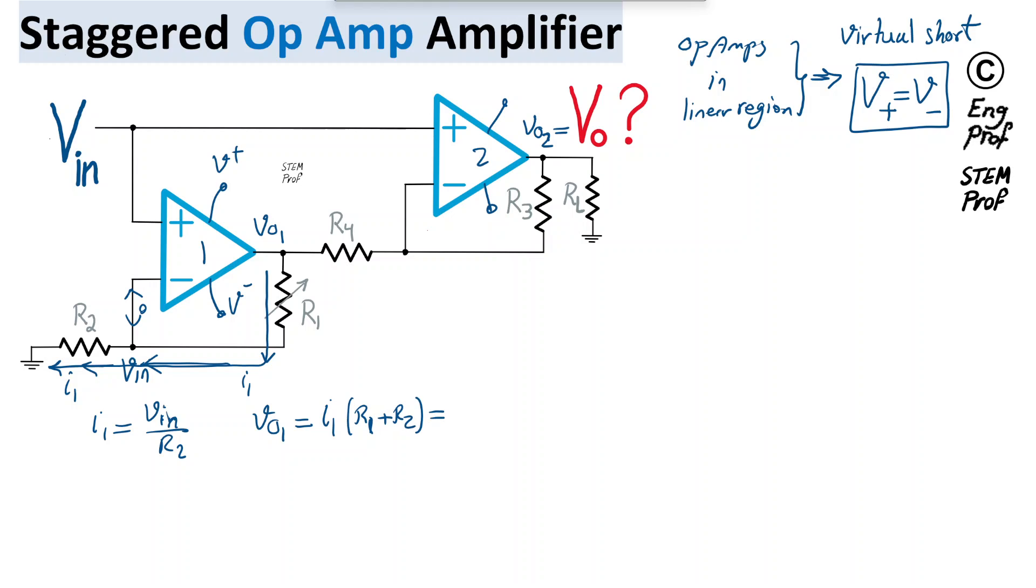Substituting for I1 via this earlier equation, we get therefore R1 plus R2 divided by the denominator R2 times Vout, which then we get the known formula for the non-inverting amplifier that Vout 1 is equal to 1 plus R1 over R2 times V-in.